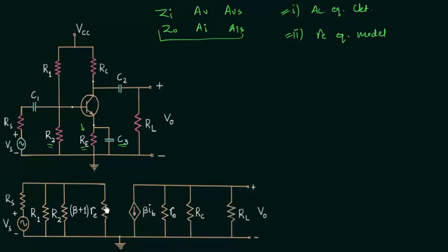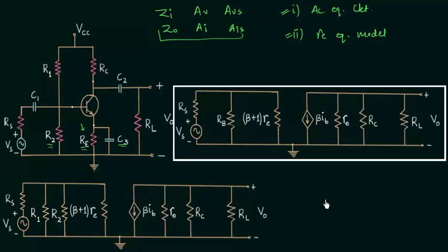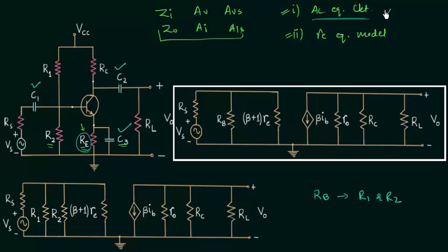This is the AC equivalent circuit with the RE model of the transistor. Comparing with the fixed bias configuration, in place of resistance RB we have resistances R1 and R2. The emitter resistance RE is short-circuited because in the AC equivalent circuit we short-circuit all three capacitors — C1, C2, and C3 — as they offer zero reactance. So in place of C3 we have a short circuit, meaning RE is short-circuited and not included on the output side. The output side is exactly the same as fixed bias, and on the input side we have R1 and R2 in place of RB.